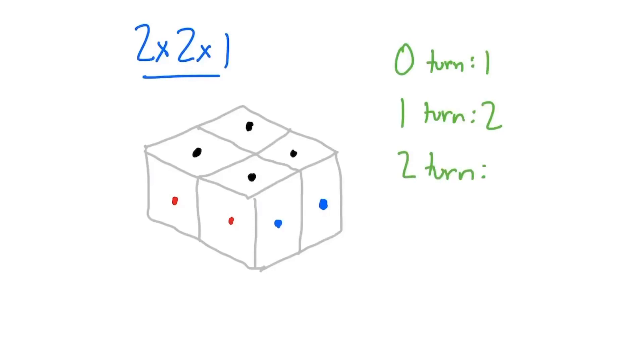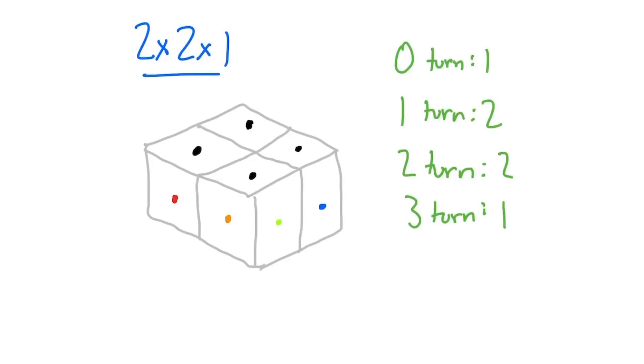How about with 2 turns? There are still only 2 combinations - there is this pair, and there is this pair. And then with 3 turns, there's only 1 combination. After the first turn, the cube would look like this, the second turn, it would look like this, and then the third turn, it would look like this. If you were to do 3 different moves from the solved state, this would always be the result. And if we were to sum up 1, 2, 2, and 1, we'd get 6. And that's how many permutations there are for it.